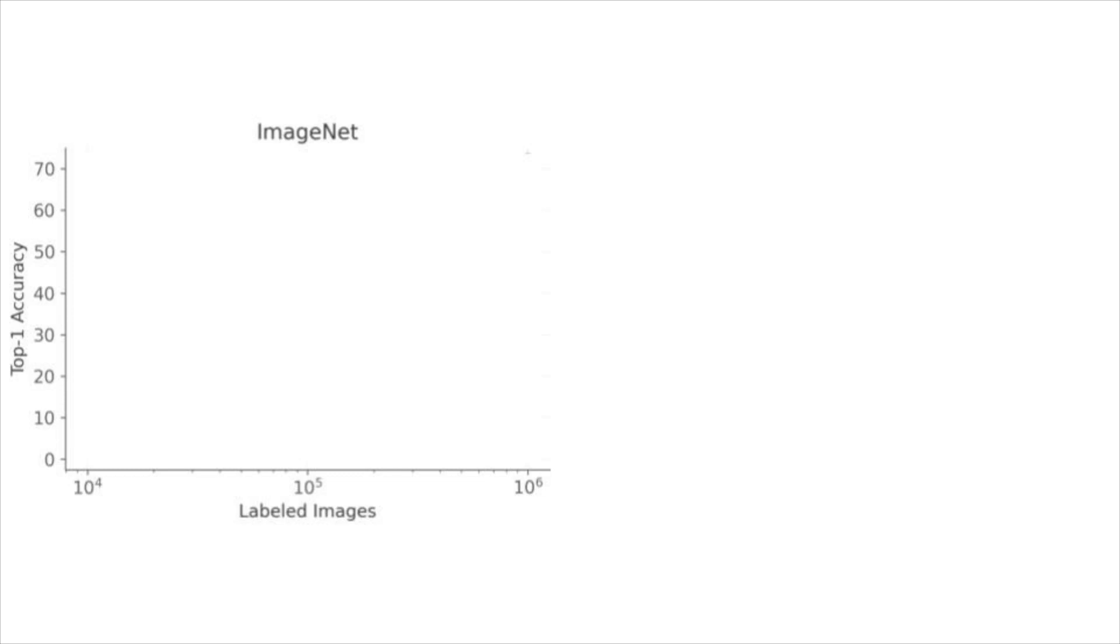On the y-axis, we have the top-1 accuracy on ImageNet. The black curve shows the performance of end-to-end training on a given amount of labeled data. As we add more labeled data, accuracy increases. Eventually, we reach the performance we'd expect from a fully supervised model.